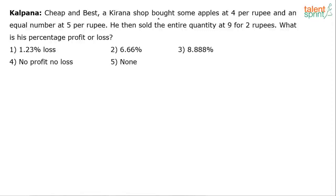A Kirana shop bought some apples at 4 per rupee and an equal number of apples at 5 per rupee. He then sold the entire quantity at 9 for 2 rupees. What is his percentage profit or loss?